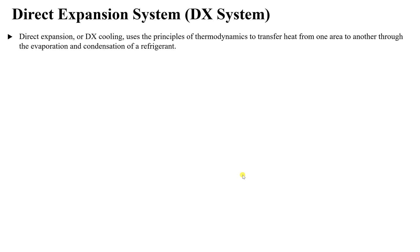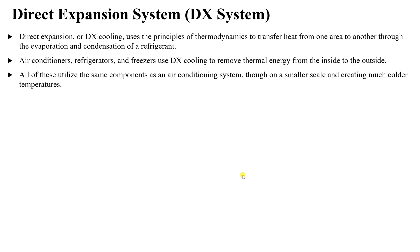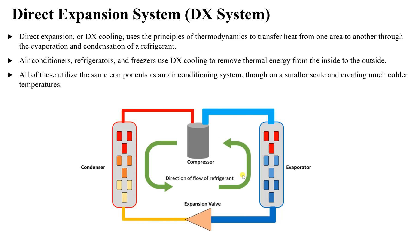Air conditioners, refrigerators, and freezers all use DX cooling to remove thermal energy from inside to outside. They all use the same components we discussed before: you compress the gas or refrigerant and then cool it down using a condenser, with a fan in the outdoor unit.